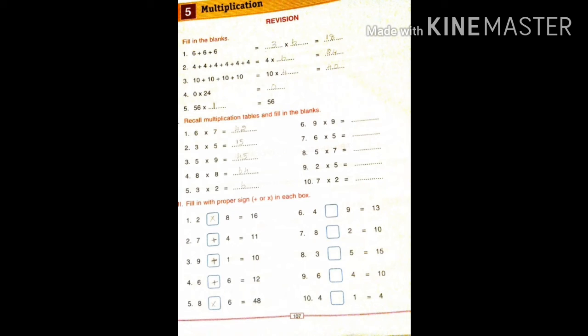First one: 6 plus 6 plus 6 — how many times is 6 repeated? 3 times. So 3 sixes are 18. Next, 4 repeated 6 times — 4 times 6 equals 24. Third one: 4 times 10 equals 40.